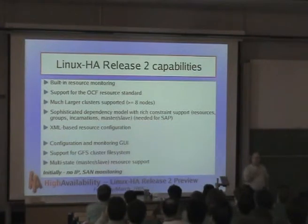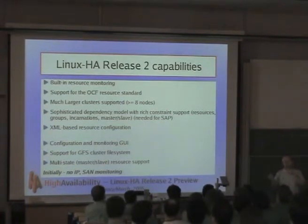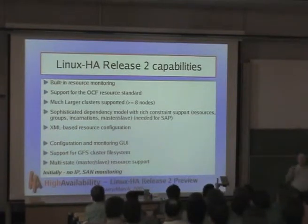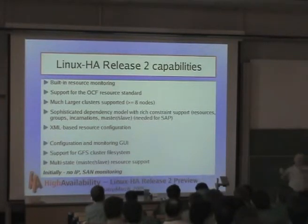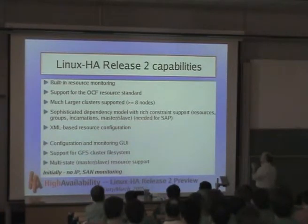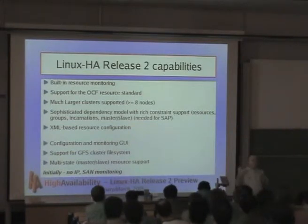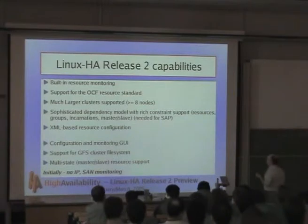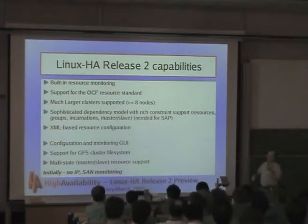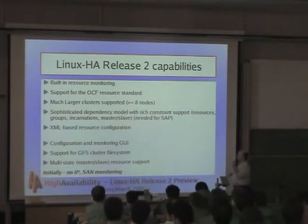We have a lot more sophisticated dependency model where you can say this resource depends on that one, but they don't have to run on the same machine — that's the kind of thing you need for SAP. If SAP is connecting to another component over the network and it goes down, you have to restart both components even though they're running on different machines. Release two has a richer set of constraints. The resource configuration is all XML-based, which simplifies writing GUIs and other auxiliary tools.